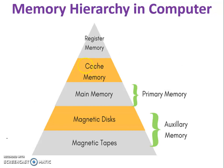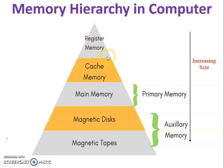This is the memory hierarchy. From top to bottom: the first one is register memory, then cache memory, then main memory, then magnetic disk, and magnetic tape. Main memory is primary memory; magnetic disk and magnetic tape are auxiliary memories. From top to bottom, the size of memory increases. Register memory is the nearest memory to the processor. From bottom to top, the speed of memory increases.